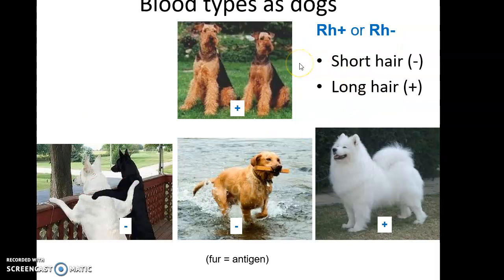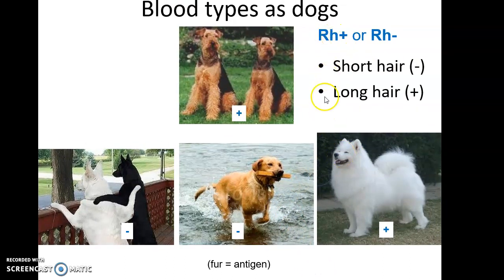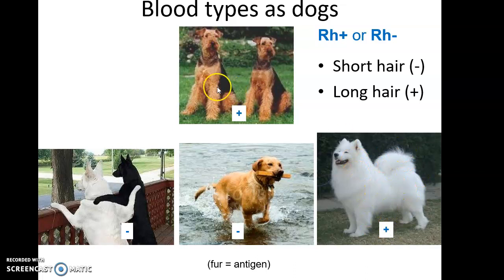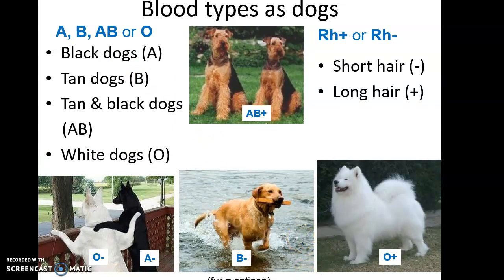There's also the Rh factor, referred to as positive — meaning it's present — or negative, meaning it is absent. The Rh antigen is either on the surface of the cell or it is not. Going back to the dog analogy: long-haired dogs are Rh positive, short-haired dogs are Rh negative. So short-haired dogs represent O negative and A negative; a short-haired dog is B negative; a long fluffy-haired dog is O positive. Dogs with both brown and black fur and long hair are AB positive — the fur is on the surface, just like antigens are on the surface.